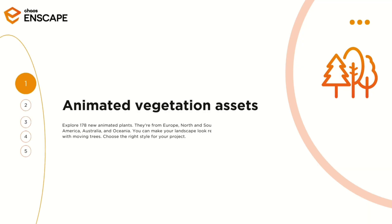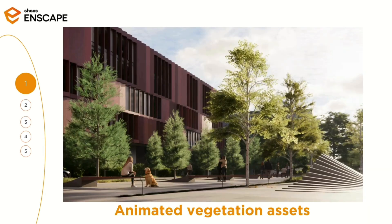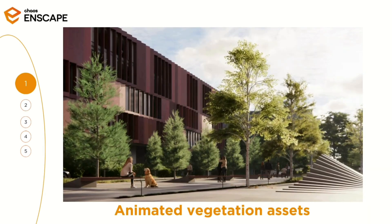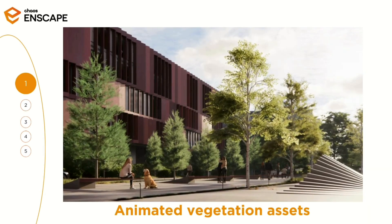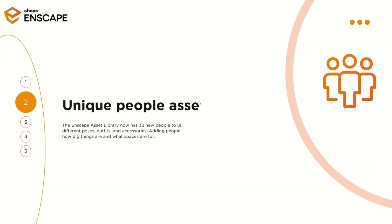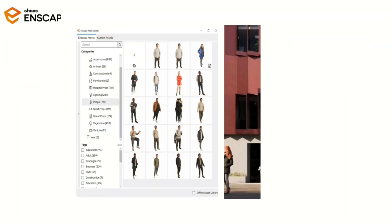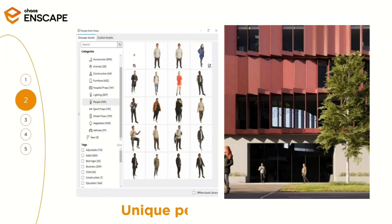Animated vegetation assets: explore 178 new animated plants. Unique people assets: the Enscape asset library now has 32 new people to use.